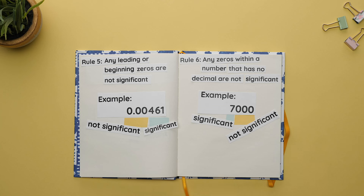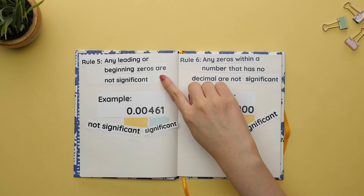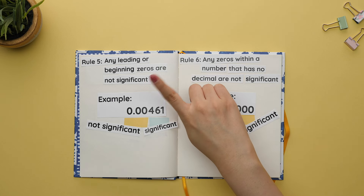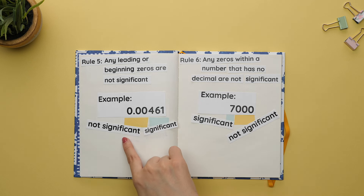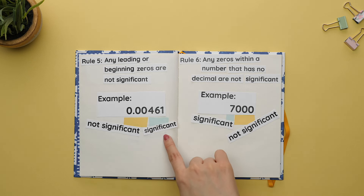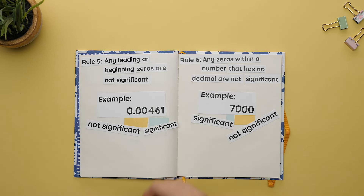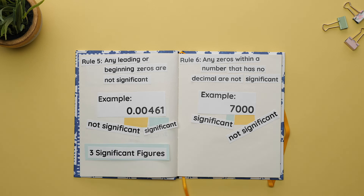Rule five: any leading or beginning zeros are not significant. These leading zeros do not count as sig figs. Only the non-zero numbers count. There are three significant figures.